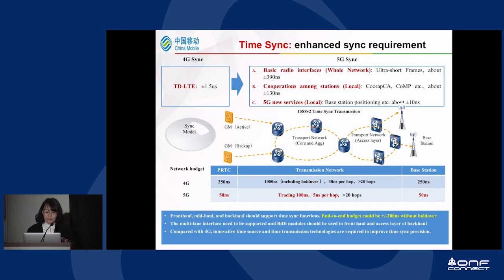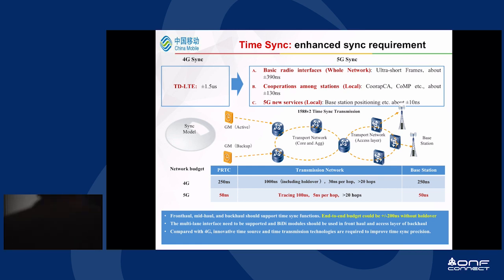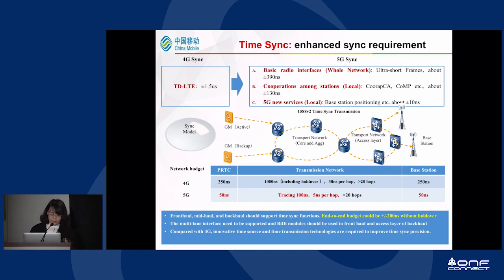Moving to time synchronization, we have enhanced synchronization requirements when moving to 5G. For fronthaul, midhaul, and backhaul, time synchronization of about 20 nanoseconds without handover should be supported. Multi-layer interfaces need to be supported, and bi-directional modules should be used in fronthaul and access-layer backhaul. Compared with 4G, innovative time source and time transmission technologies are required to improve time synchronization precision.